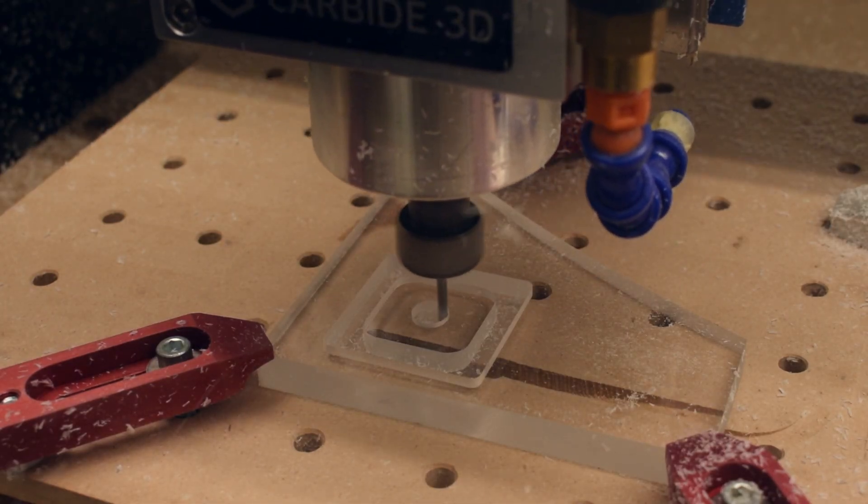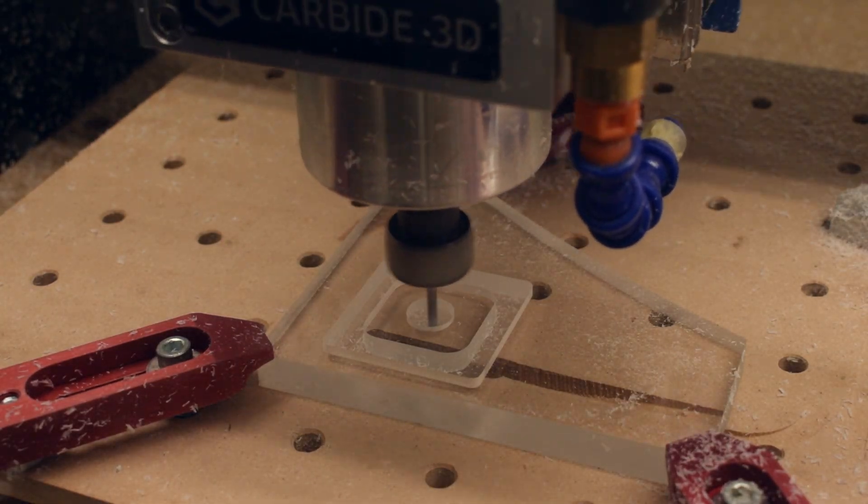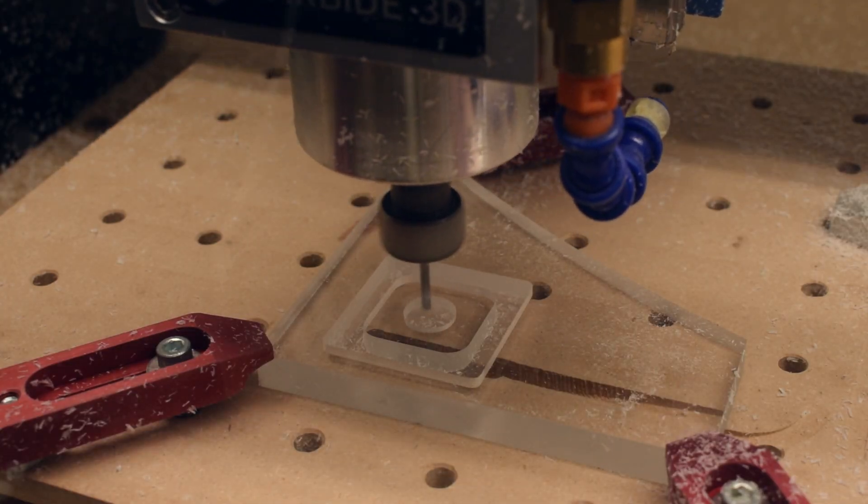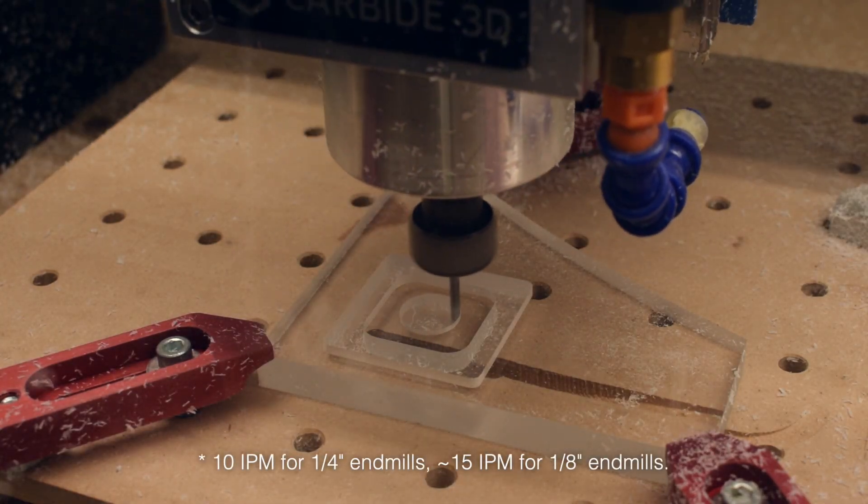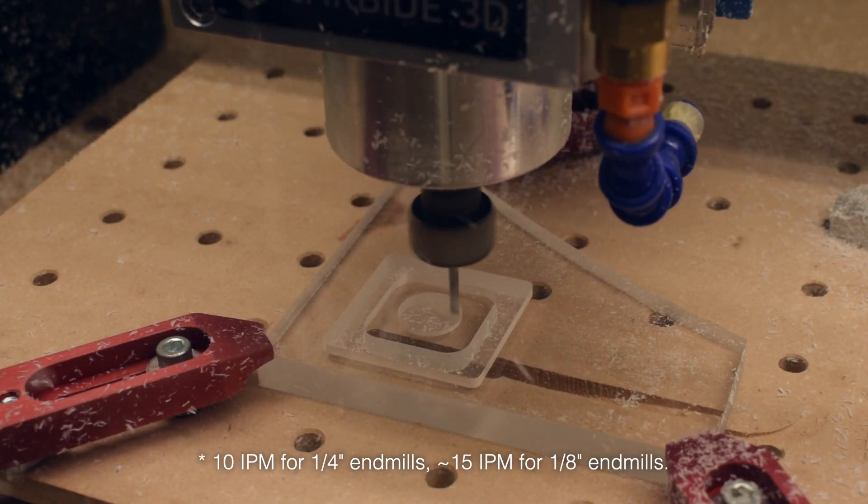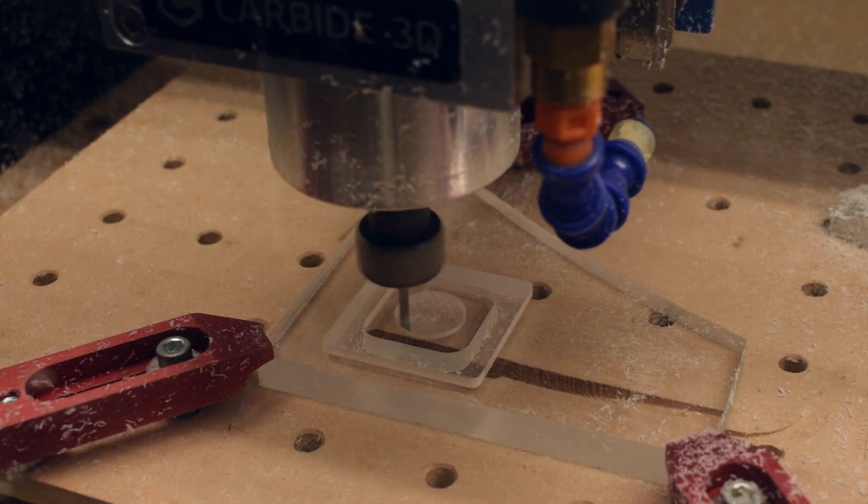If you're using Fusion or some other CAM package where you can ramp or helix into your material, you can definitely get away with deeper cuts. But for basic tool paths that plunge straight into stock, I find that 10 inch per minute plunges combined with depths of cut of less than a sixteenth of an inch provide the greatest reliability, so that's why I recommend most people start there.